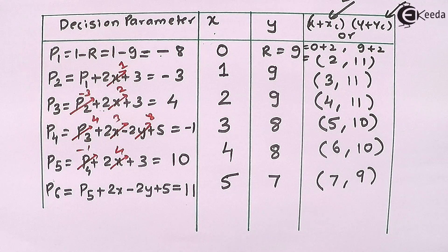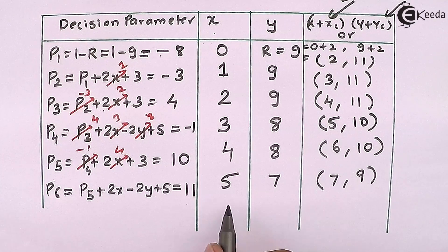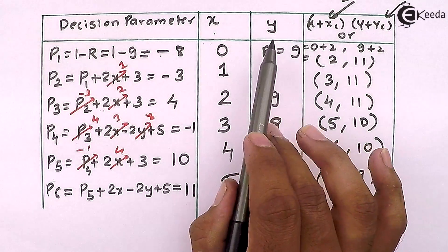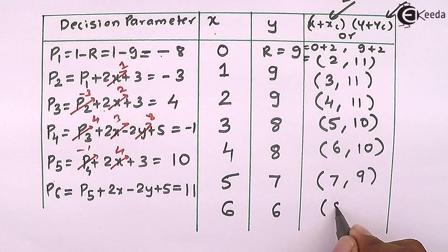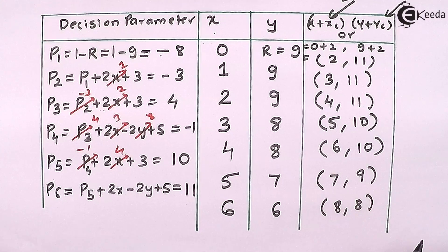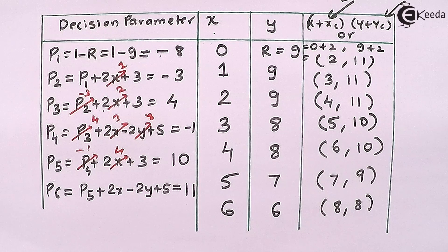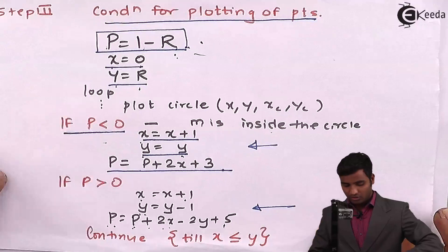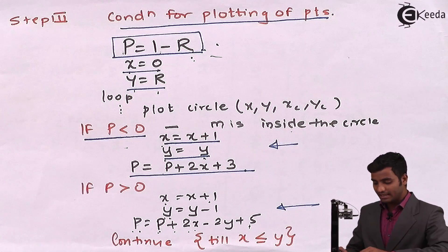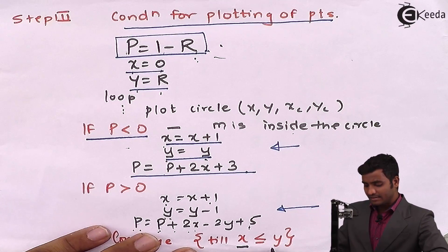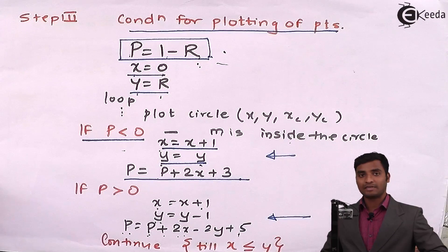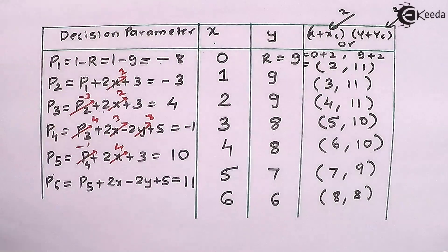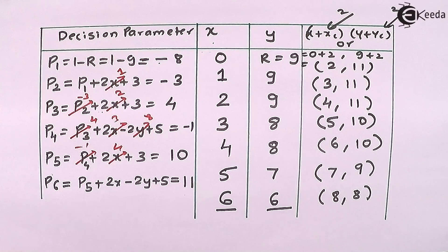Since P6 is greater than 0, X is incremented by 1 to 6 and Y is decremented by 1 to 6, giving coordinate (8, 8). Now we can see the stopping condition: we continue until X is less than or equal to Y. Since X = Y = 6 (and plotted coordinate is 8, 8), the condition is achieved and we stop here.